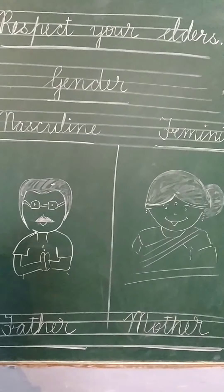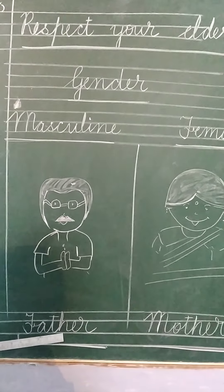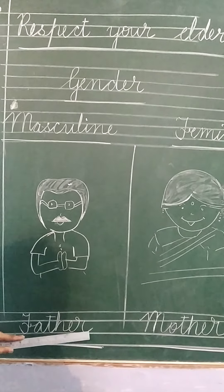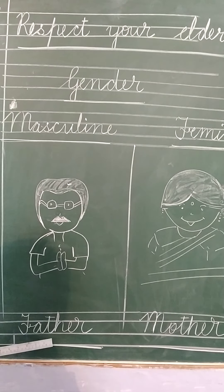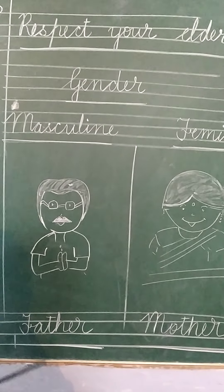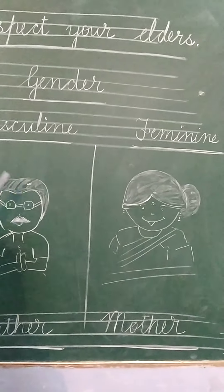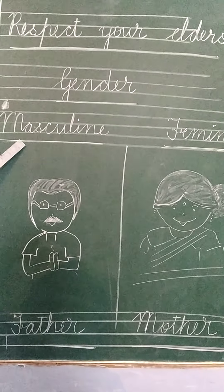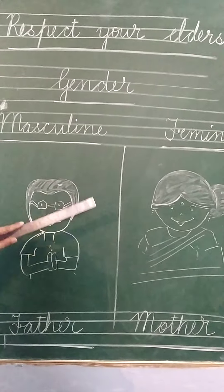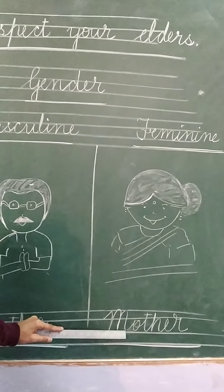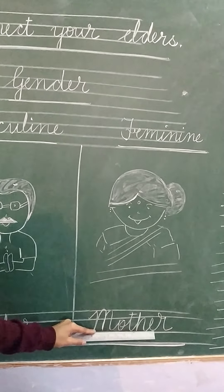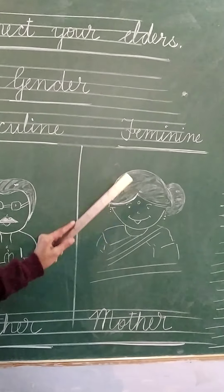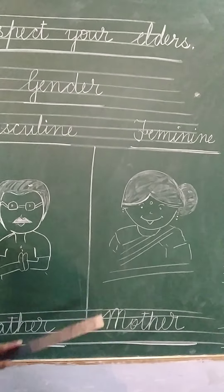Number one is father. F-A-T-H-E-R. Father. You know very well — father is a man, so this is masculine gender. And M-O-T-H-E-R — mother. Mother is feminine gender.